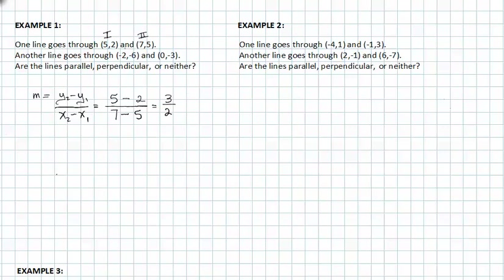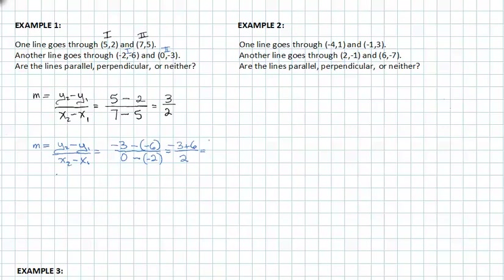Now let's take the second line, labeling them as point one and point two. We'll get slope again: y₂ minus y₁ over x₂ minus x₁, which gives us negative three minus negative six over zero minus negative two. This is equal to negative three plus six over positive two, or three-halves. If we look at these two slopes to compare them, they are indeed exactly the same, so they must be parallel lines.